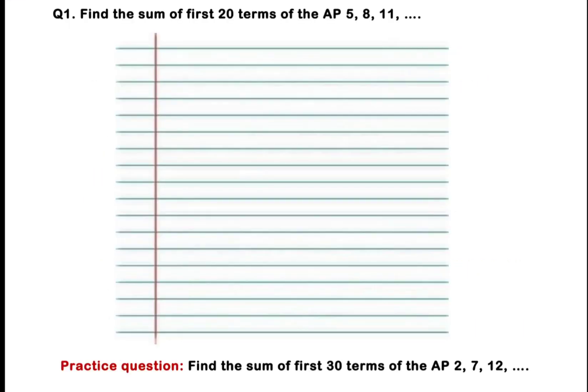Now we will solve the first question of this passing package series. The first question is: find the sum of first 20 terms of the AP 5, 8, 11 and so on. We need to find out the sum of first 20 terms of the given AP, that is 5, 8, 11 and so on.